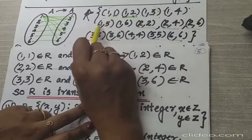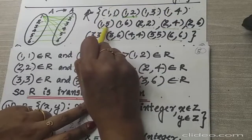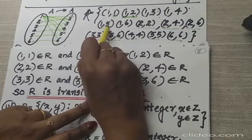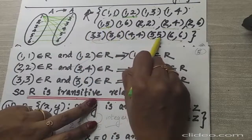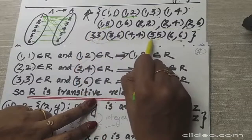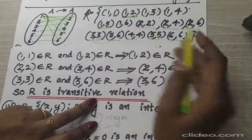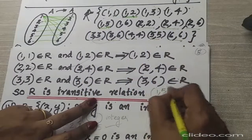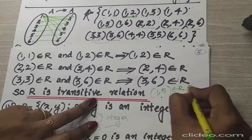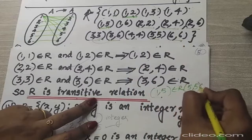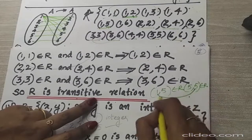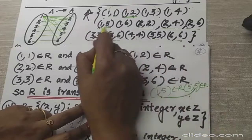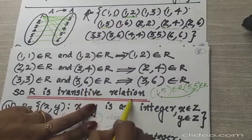Like, if I take (1,5): (1,5) belongs to the relation. It is ending with 5, so we should see the ordered pair which starts with 5. (5,5) belongs to the relation. So: (1,5) belongs to the relation and (5,5) belongs to the relation — so for transitivity, we need to check if (1,5) is there. Yes, (1,5) belongs to the relation. So it is transitive.